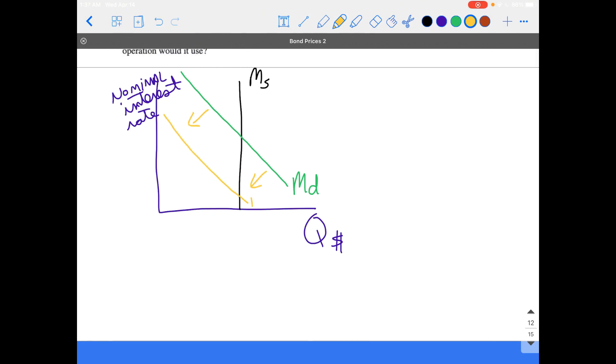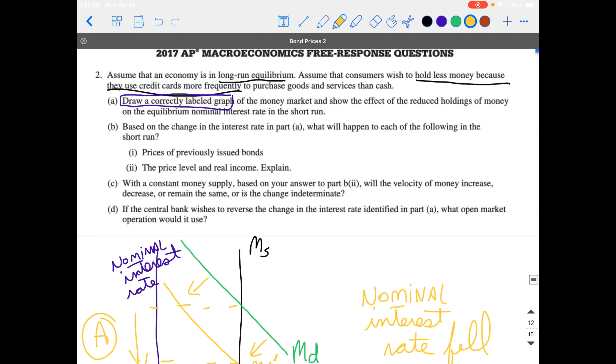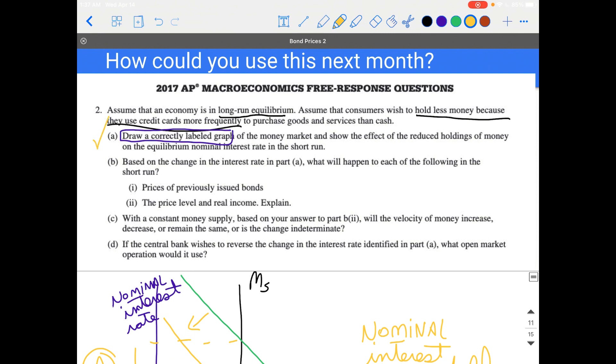That would be a reduction in the demand curve, a shift to the left of the demand curve. And what we would see here is that the nominal interest rate fell. So that's Part A.